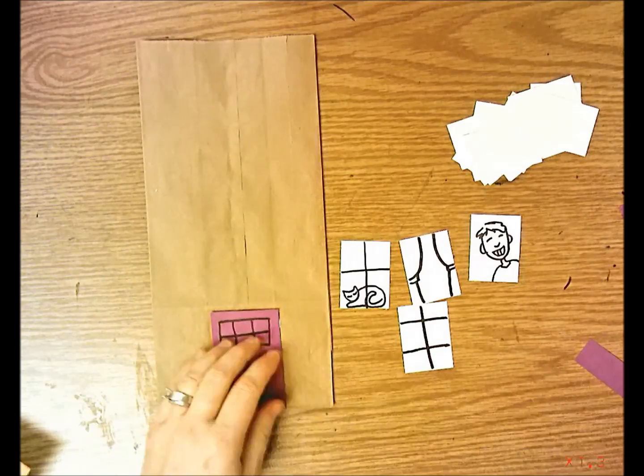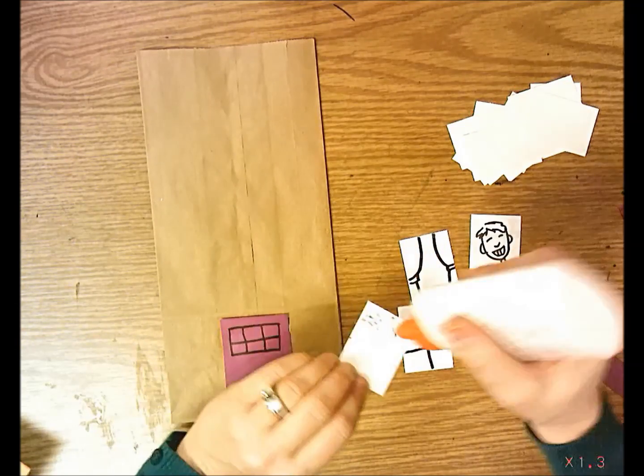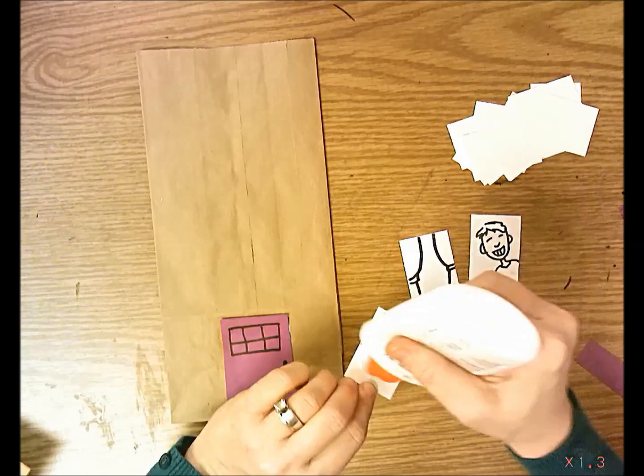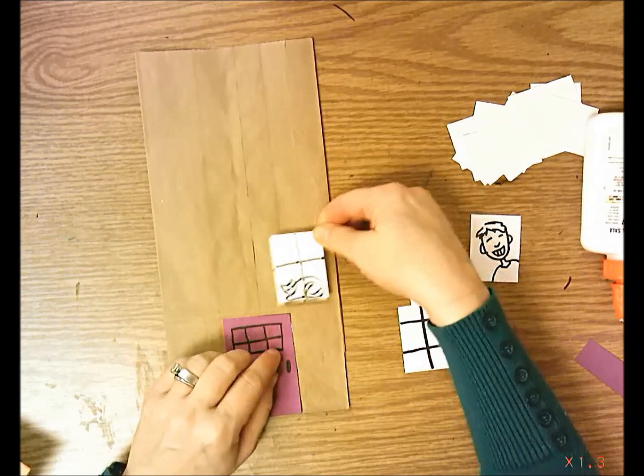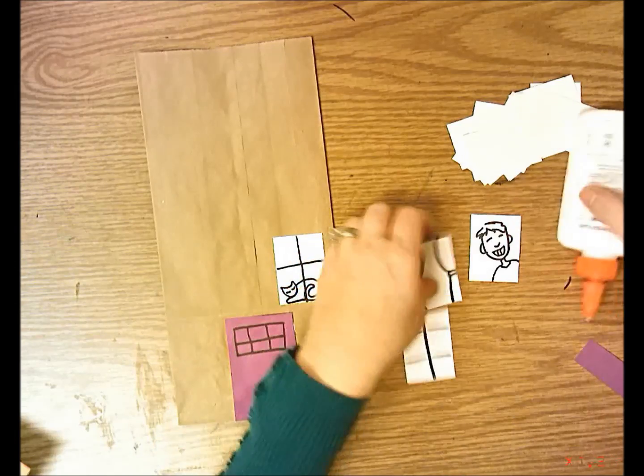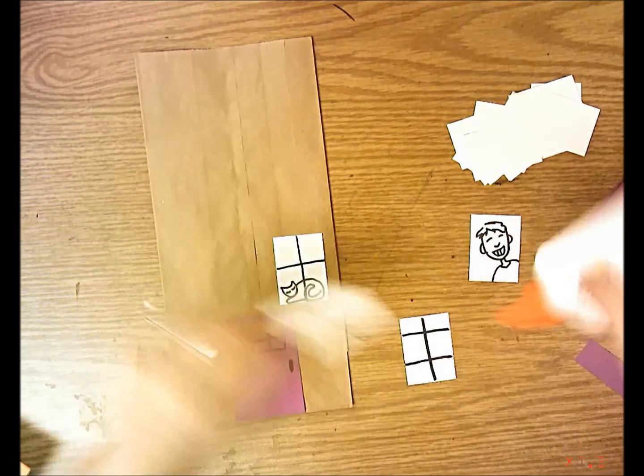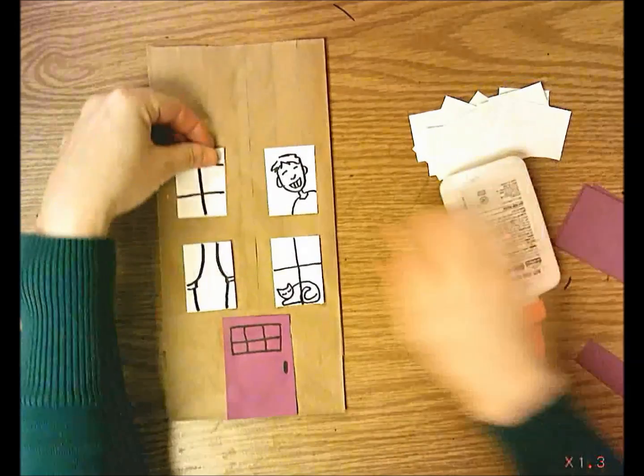Then you're going to glue these down and I want you to glue them close to the top of your door. Don't leave a big space between the door and your first set of windows. Put them down close to the door so we can see them once we add the roof later.